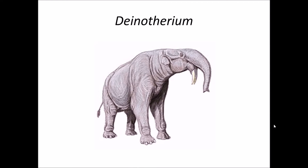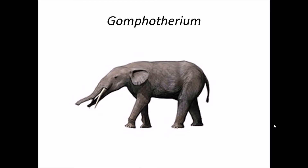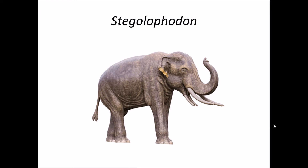Dinotherium was an elephant-like creature and hence we put them under the family Proboscidea. Proboscidea is a family which includes elephants and elephant-like creatures. Confotherium had four tusks and also belongs to the family Proboscidea. Stagolophodon also belongs to the family Proboscidea and had four tusks, which are actually modified incisal teeth.